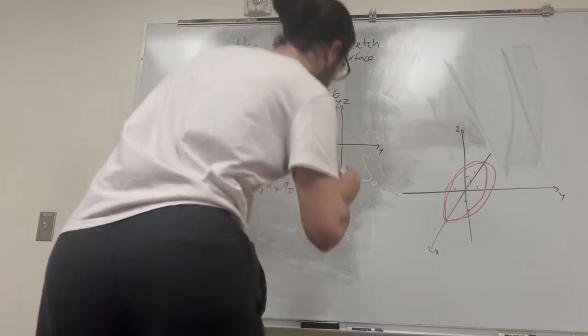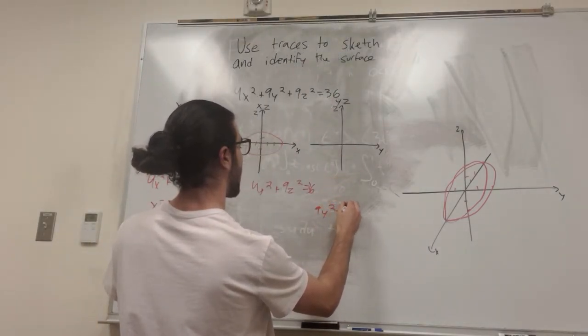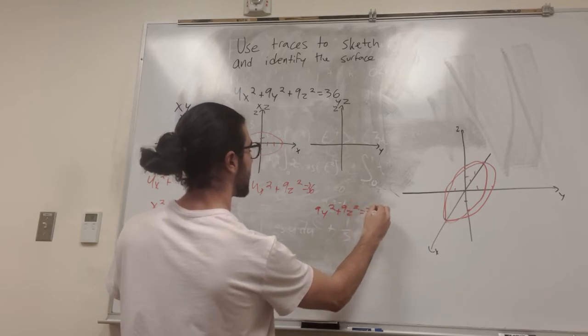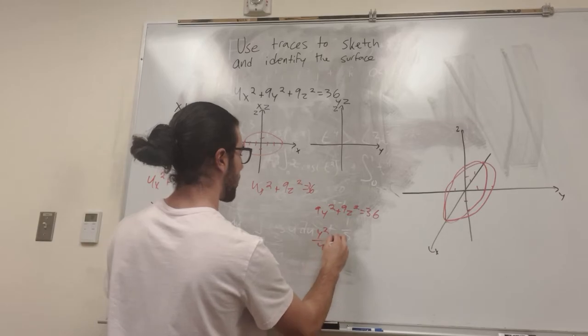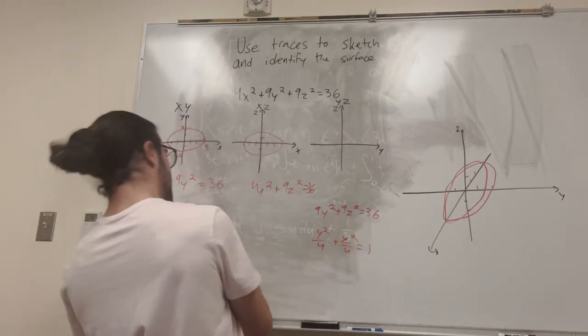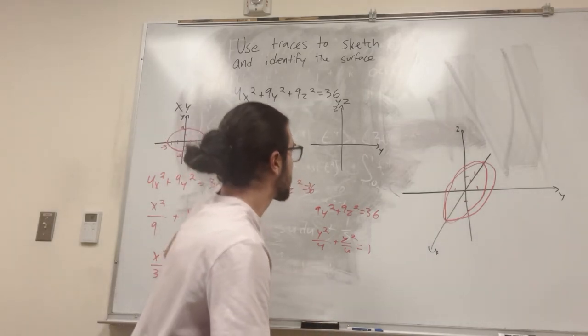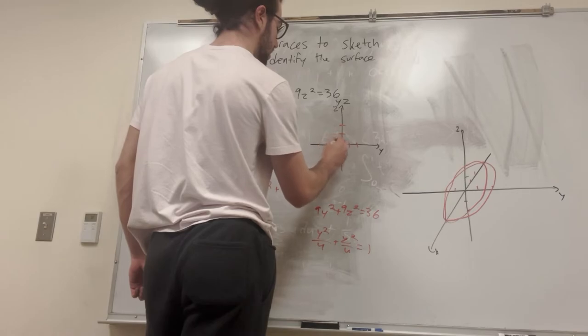Alright, now we go to the yz plane. So now we're going to have 9y squared plus 9z squared equals 36. Divide by 36 on both sides, you're going to get y squared over 4 plus z squared over 4 equals 1. Do the same thing where you split it up, so it's going to be intercepts at 2 and 2. So this is just going to be a normal circle with a radius of 2.